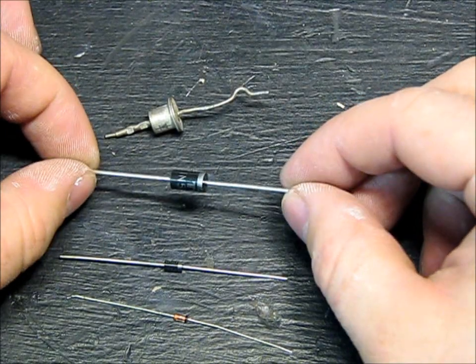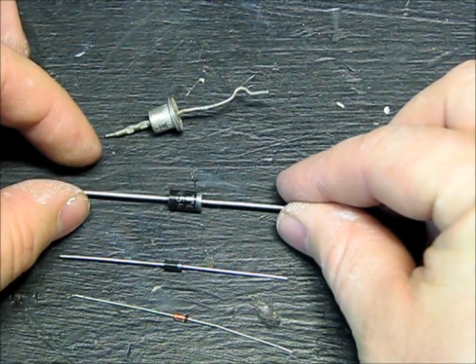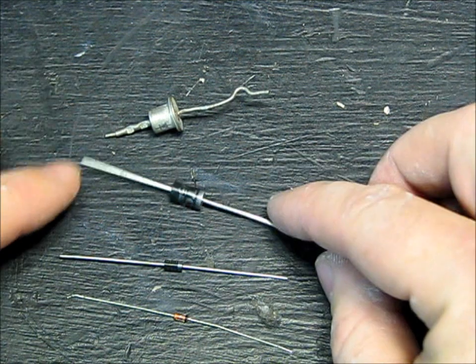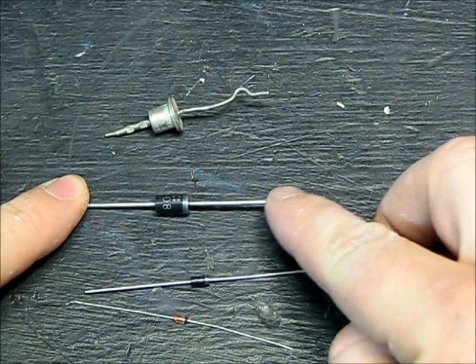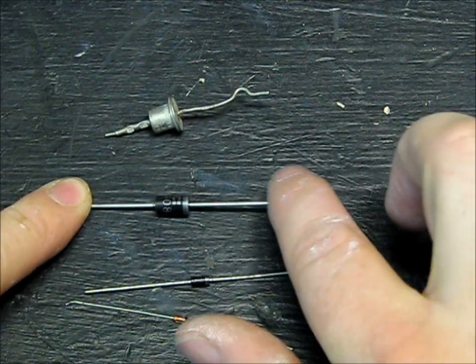A diode is a one-way valve for electricity. So if you hooked up a battery, positive on this side, negative on this side with the band, current will flow through.